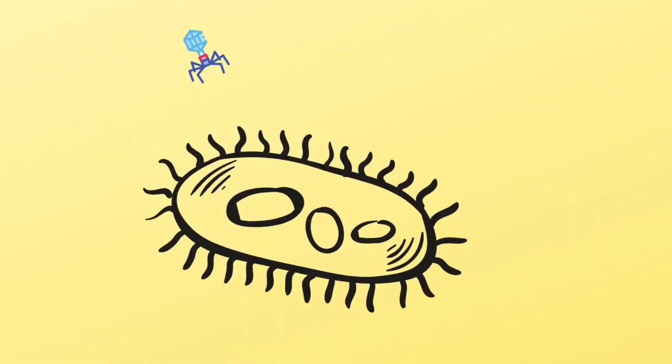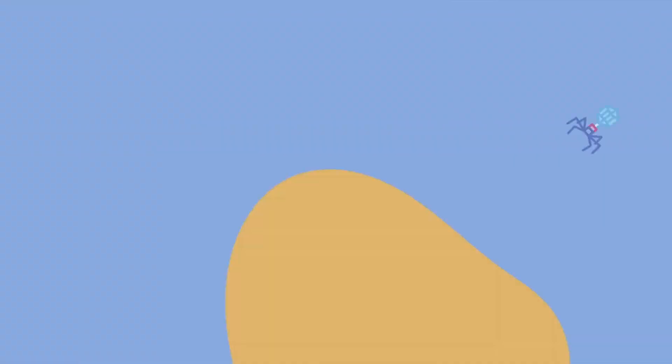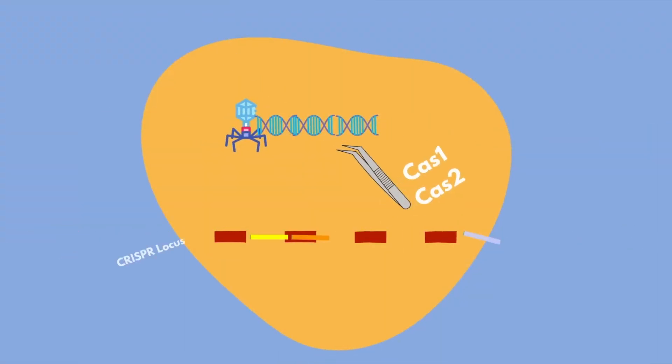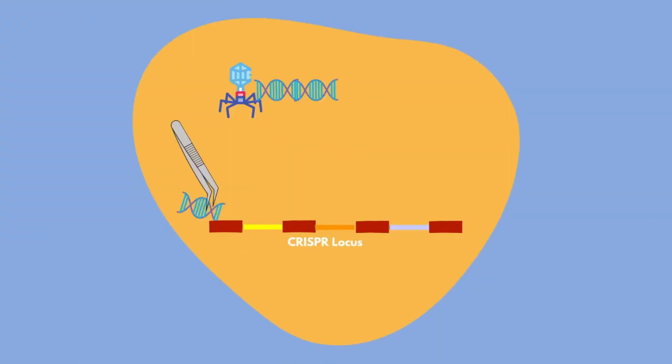So what was CRISPR initially meant to do? Let's say that we have a new pathogen that wants to enter a bacteria. The bacteria uses two proteins, Cas1 and Cas2, to cut out a segment of the foreign DNA and then add it to the CRISPR array, which is then known as the protospacer.